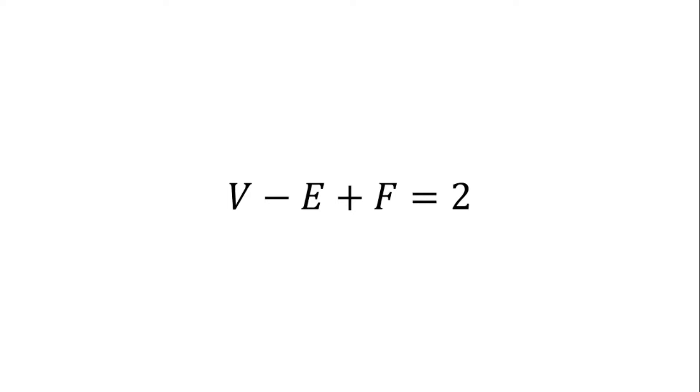This is Euler's formula for polyhedron. It says that for a polyhedron, the number of vertices minus the number of edges plus the number of faces is equal to 2.